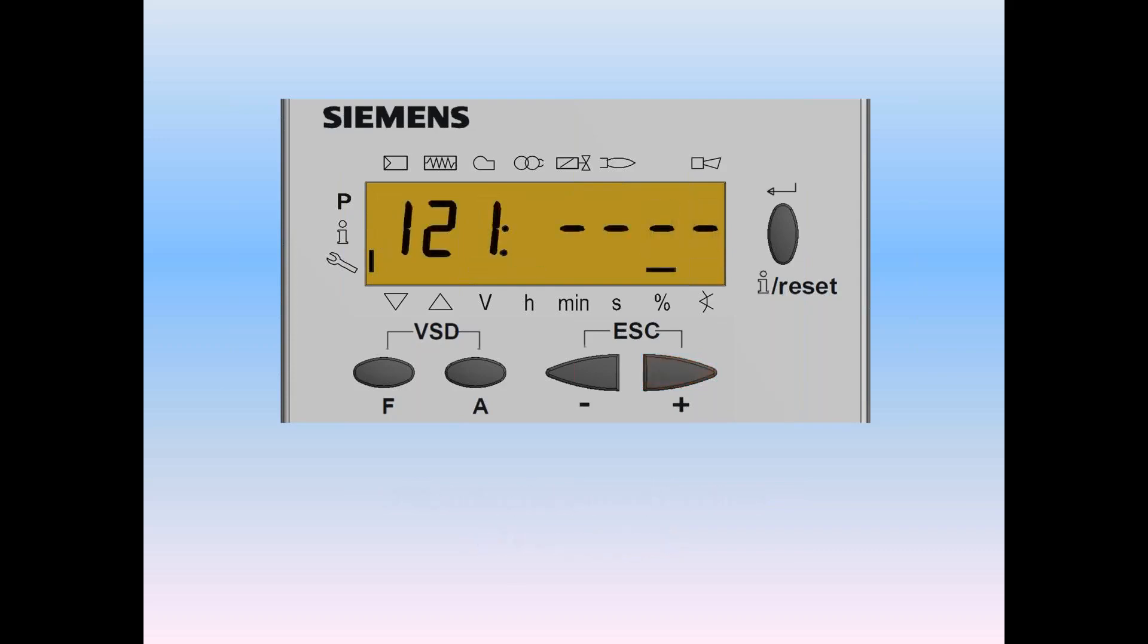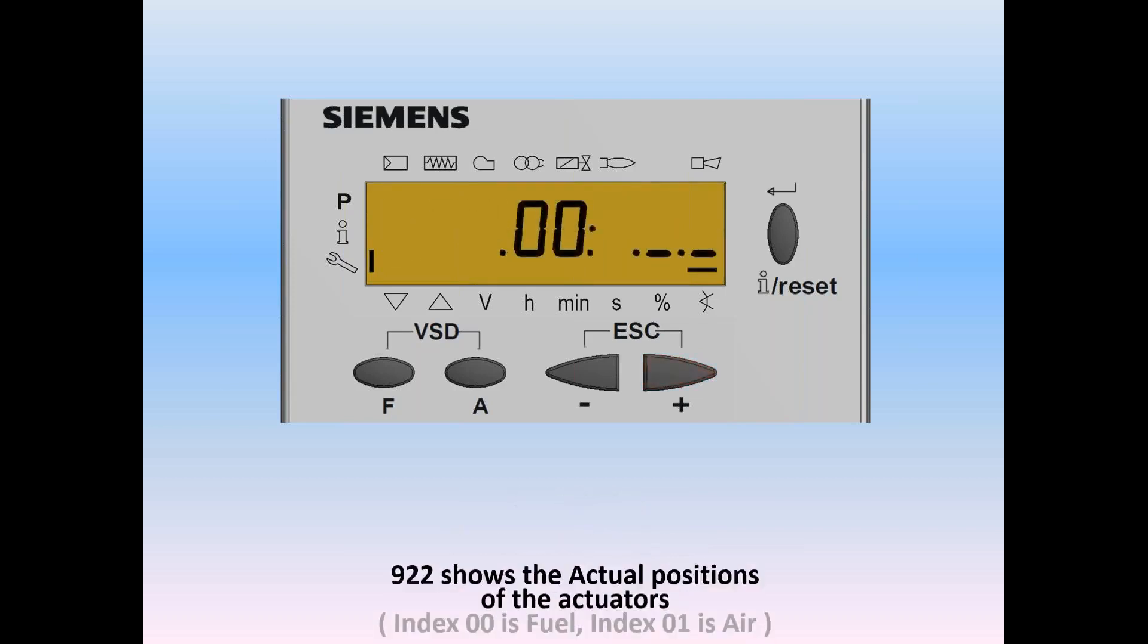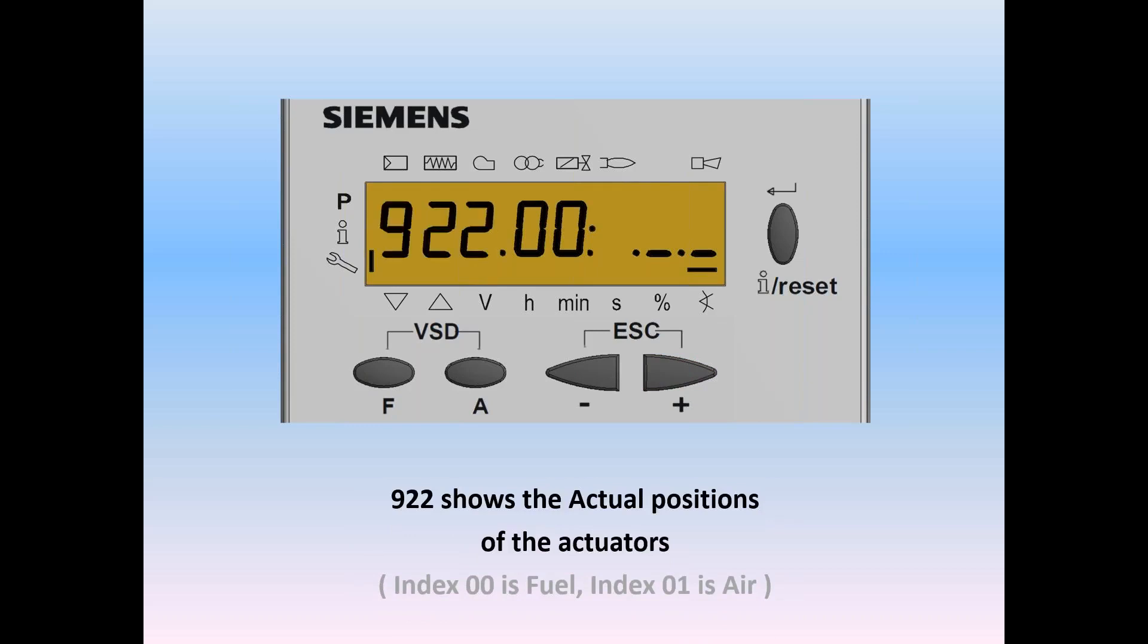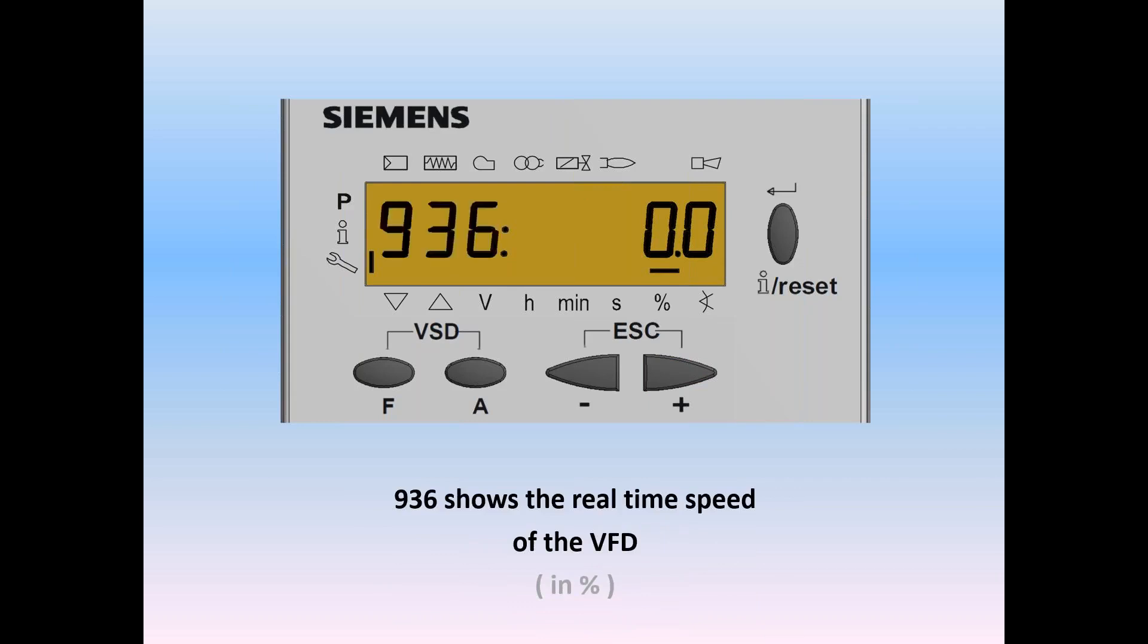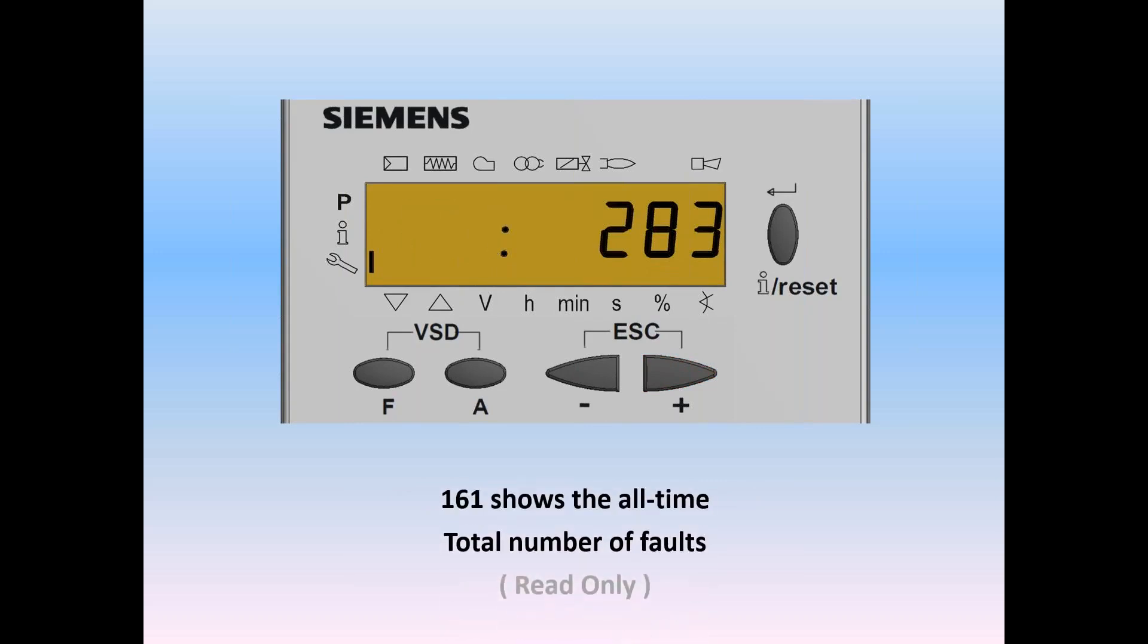Do a plus. And we'll move on to the next screen. That would be 121. 121 shows the manual firing rate. In this case, we don't have a manual firing rate. Do the plus key. And we move on to 922. 922 shows the actual positions of the actuator. This particular parameter has indexes. Zero, zero is fuel. Zero, one is air. We'll look at that later. Do a plus. And we get 936. 936 shows us the real-time speed of a VFD if we're so equipped. In this case, it's zero. Do a plus. 161 shows us the total number of faults. It's read-only. You can't change it. It tells you that this system has experienced 283 faults in its entire lifetime.